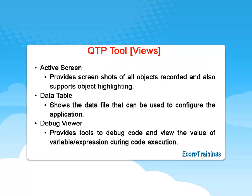In QTP, we can mainly use Active Screen, Data Table, and Debug Viewer. Active Screen provides screenshots of all objects recorded and also supports object highlighting. Data Table shows the data file that can be used to configure the application. Debug Viewer provides tools to debug code and view the value of variables or expressions during code execution.